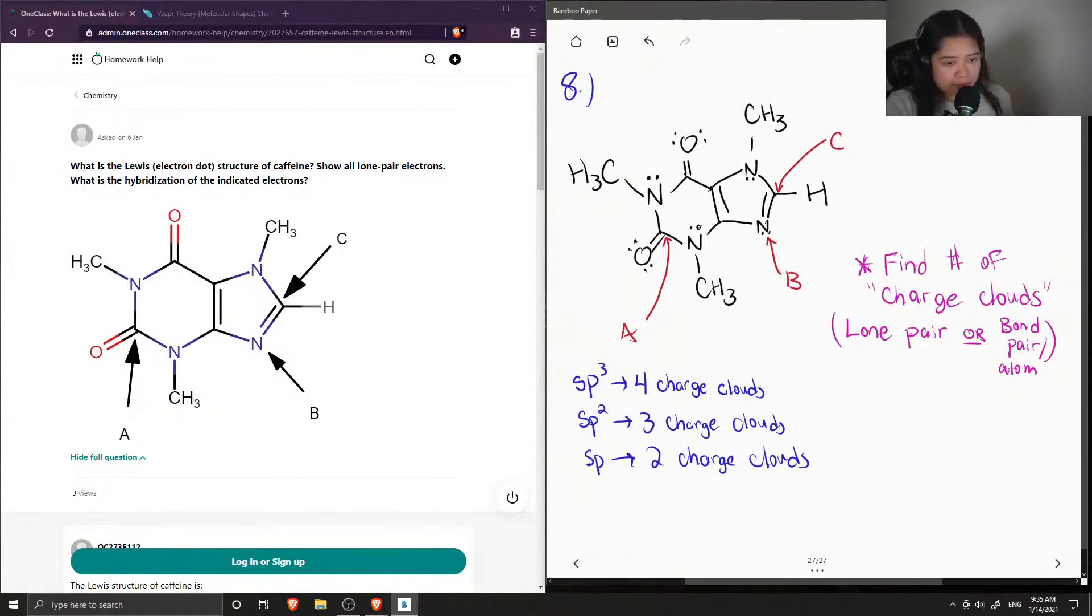Okay, so now let's look at the atoms that they give us. So carbon is like right here. If we count out its number of charged clouds, there are no lone pairs on this carbon, but it is bonded to three other atoms. So therefore this is going to be sp2.